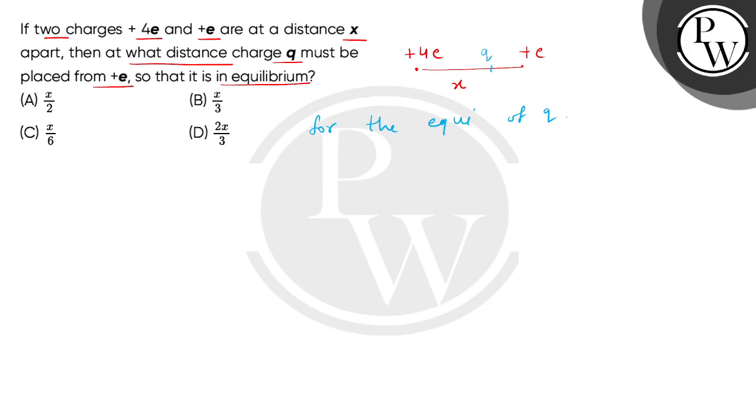If we consider positive charge of q, then +e will exert a repulsive force, this will be F1, and +4e will also exert a repulsive force which acts as F2.